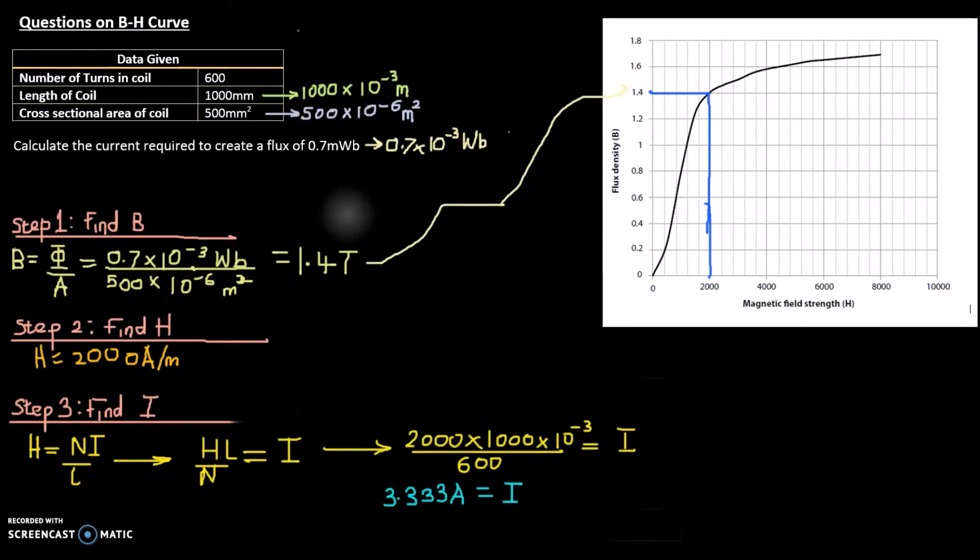Once we found our H from the graph, we know from the formula sheet that H is the number of turns times the current divided by the length of the coil. Here we need to rearrange that to get the current, so if we cross multiply, the L goes up and the N comes down. That will give us current is H times L divided by N.